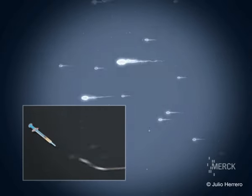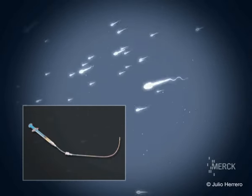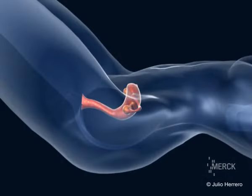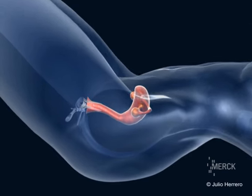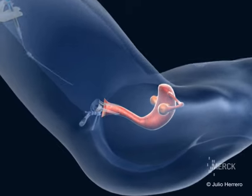The sperm that has been prepared is loaded into a syringe to which a catheter is attached. Then the speculum is introduced into the vagina, allowing the entrance of the neck of the uterus to be made visible.